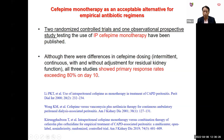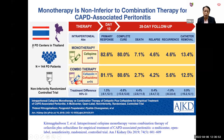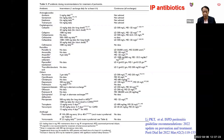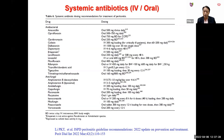Two RCTs and one prospective observational study have evaluated IP cefepime as monotherapy. These collectively showed a primary response rate exceeding 80% on day 10. A Thai RCT across eight PD centers compared cefepime monotherapy versus cefepime plus ceftazidime, showing comparable primary response rates, complete cure rates, death, relapse, recurrence, and catheter removal rates between the two arms, supporting the recommendation for cefepime monotherapy as an alternative.